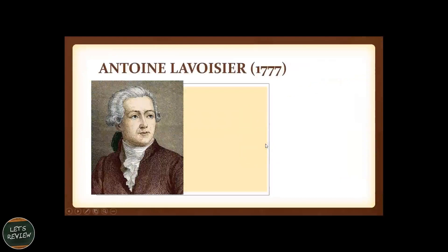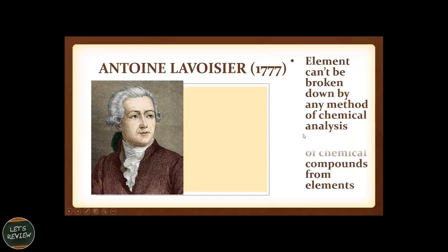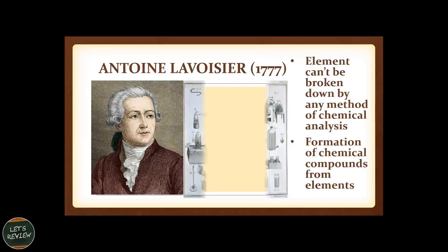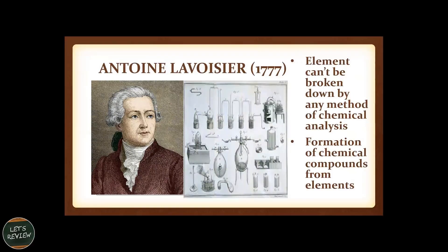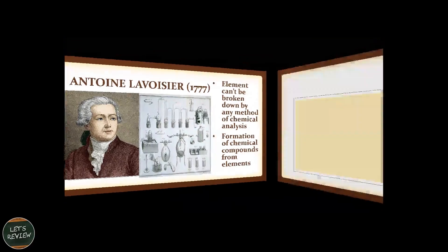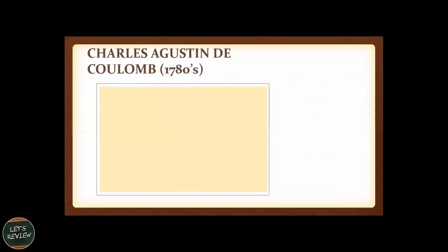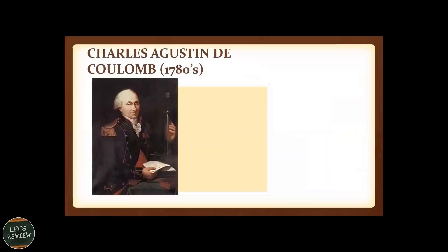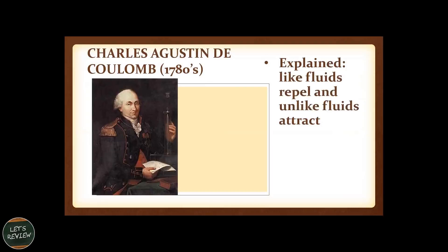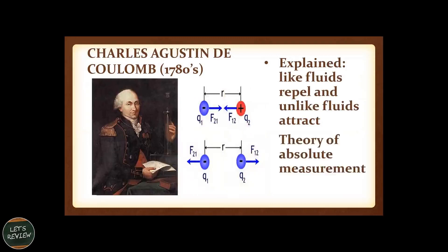In 1777 was Antoine Lavoisier. He said that elements cannot be broken down by any method of chemical analysis. Formation of chemical compounds from the elements was also being said by Lavoisier. The idea of Charles-Augustin de Coulomb, 1780. He explained that like fluids repel and unlike fluids attract. He called it the theory of absolute measurement.